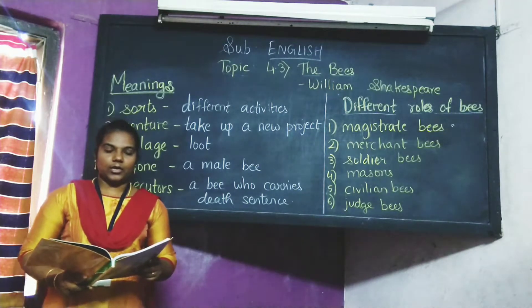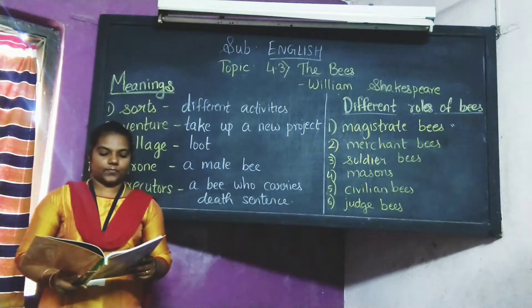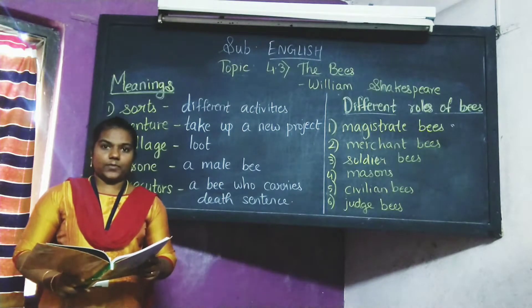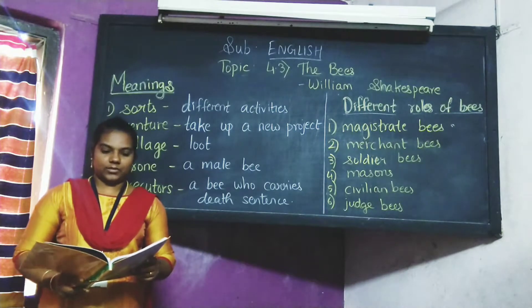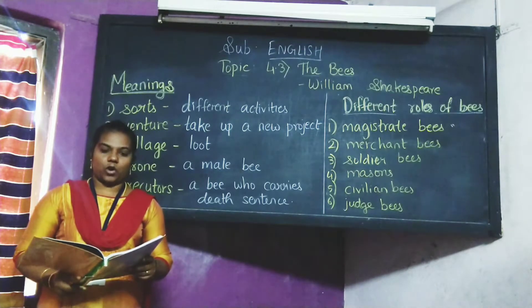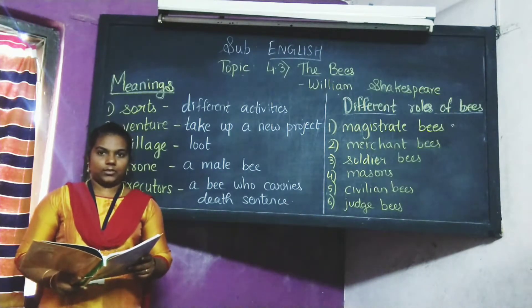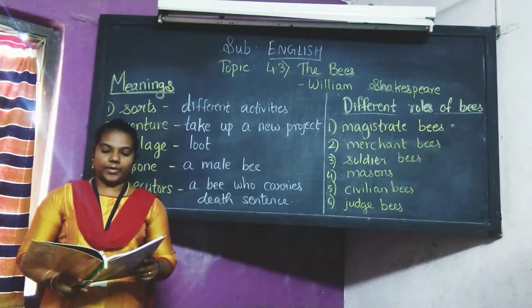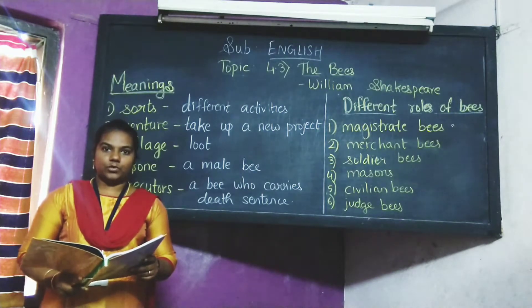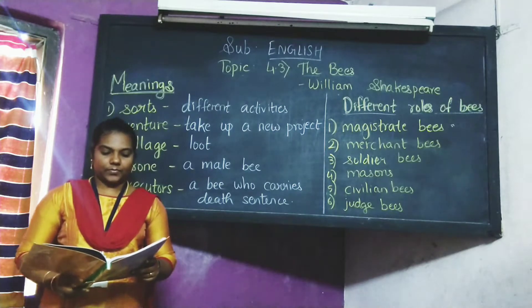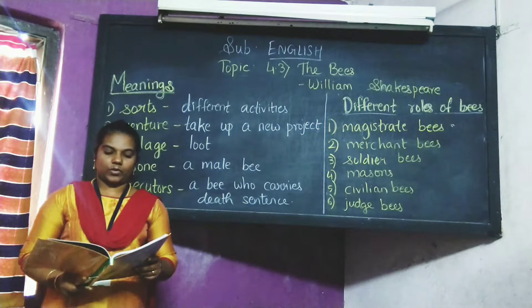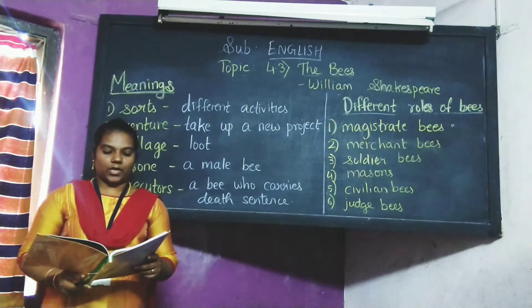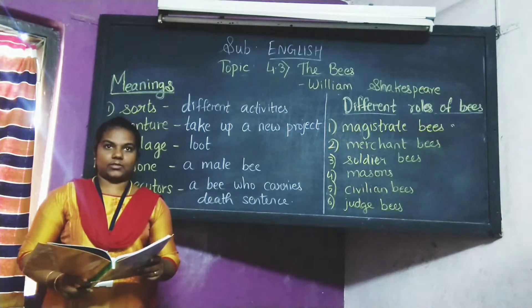They have a king and officers of sorts. Where some, like magistrates, correct at home. Others, like merchants, venture trade abroad. Others, like soldiers, armed with their stings, made boot upon the summer's velvet parts. Which village they with merry march bring home to the royal tent of their emperor, who busied in his majesty's service.